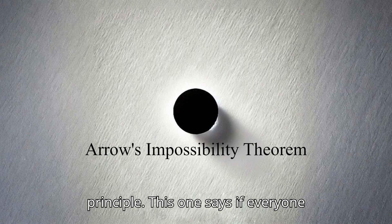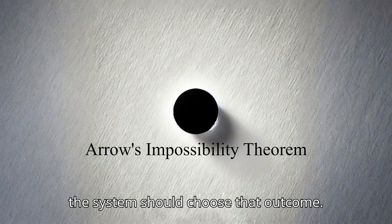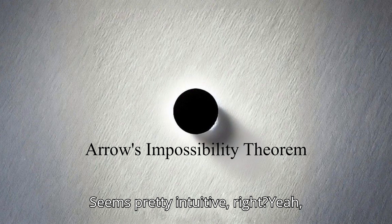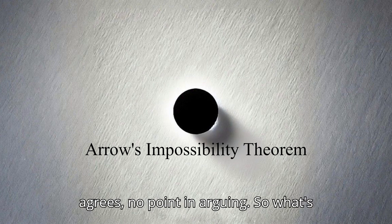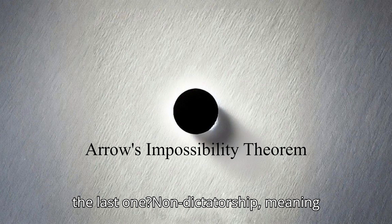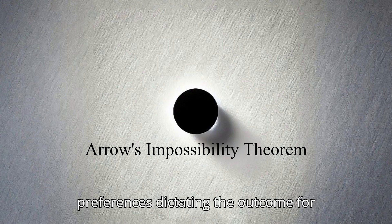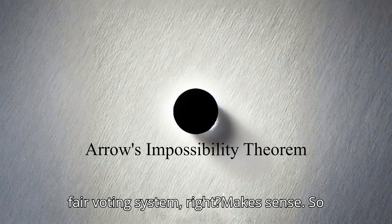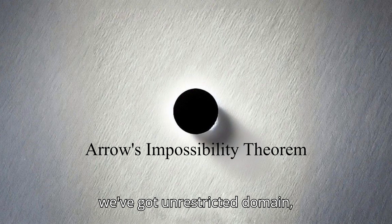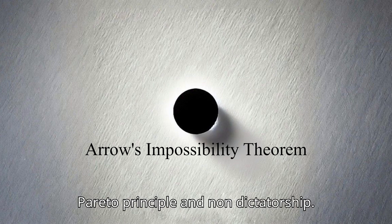The Pareto principle says if everyone prefers one outcome over another, the system should choose that outcome. Seems pretty intuitive — like if everyone agrees, no point arguing. And the last one is non-dictatorship, meaning you can't have one single person's preferences dictating the outcome for everyone else. No dictators allowed in a fair voting system.